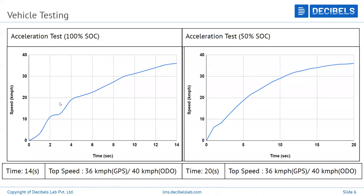This 6-second performance drop is very important to study. Based on this finding, we go back to the battery engineering team and ask them to come up with a solution where the cell can discharge more current even at lower SOC levels.